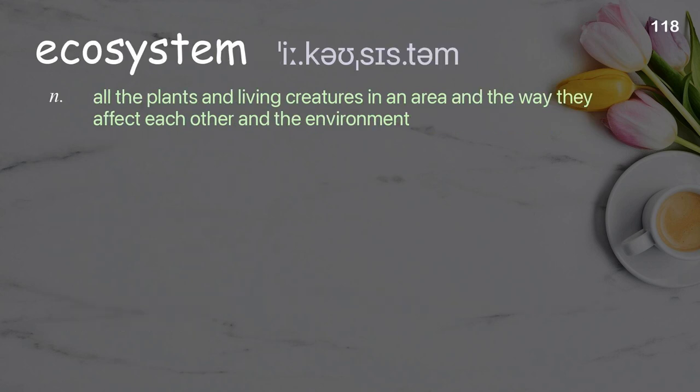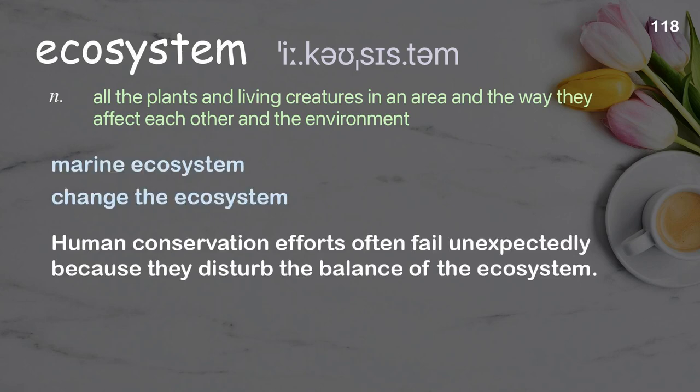Ecosystem: All the plants and living creatures in an area and the way they affect each other and the environment. Examples: Marine ecosystem. Change the ecosystem. Human conservation efforts often fail unexpectedly because they disturb the balance of the ecosystem.